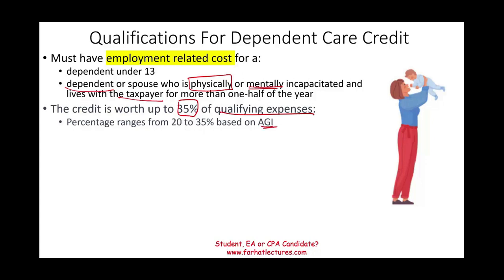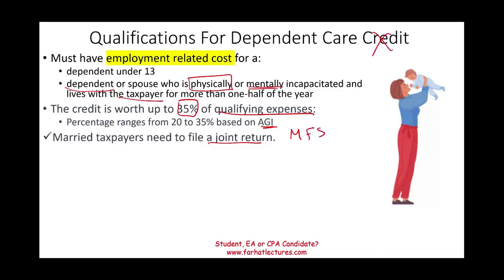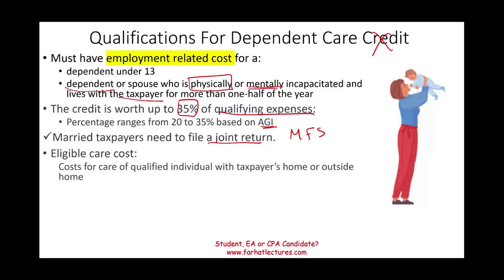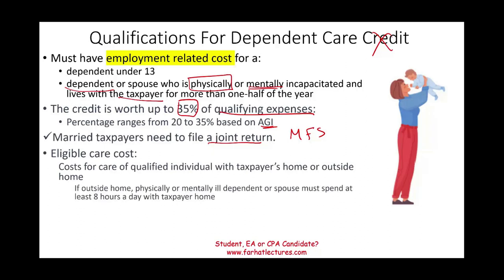We're going to look at the numbers shortly on the next slide. If you are married, you have to file a joint return — this credit does not apply if you are married filing separately. Regarding eligible care costs, whether in-home or outside-home doesn't matter. However, if you're paying someone to care for a dependent who is mentally or physically ill outside the home, that person must spend at least eight hours with you during the day; otherwise the care is not considered qualifying.